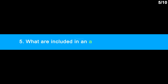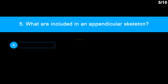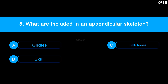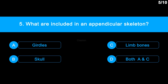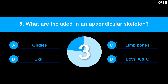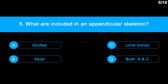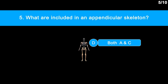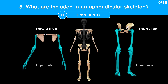Question 5: What is included in the appendicular skeleton? Option A, girdles. Option B, skull. Option C, limb bones. Option D, both A and C, girdles and limb bones. The appendicular skeleton is composed of girdles and limbs on either side of the central axis. The arms and legs are called the upper and lower limbs respectively.